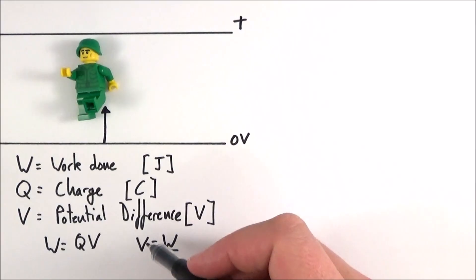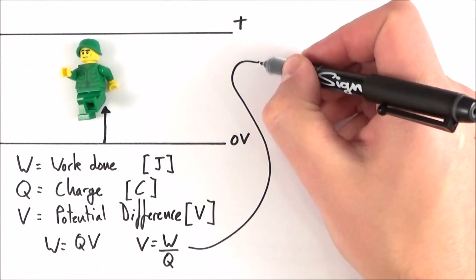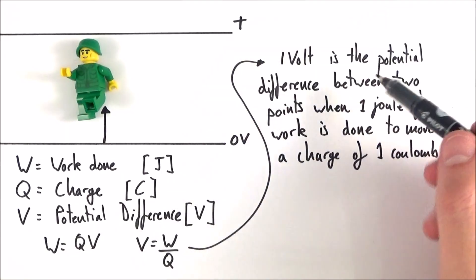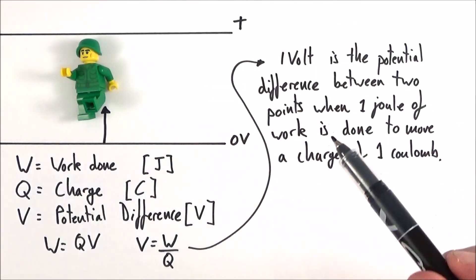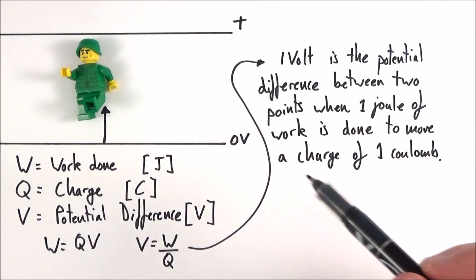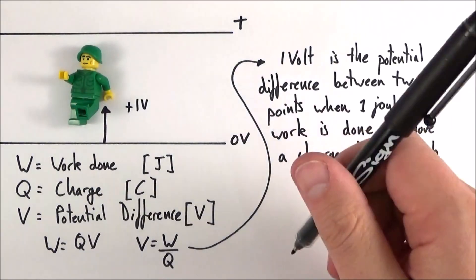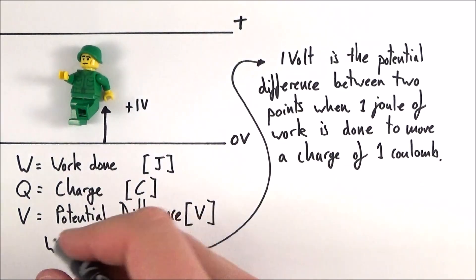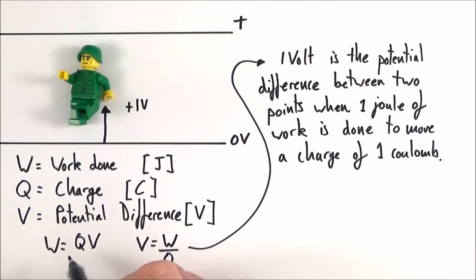And it's this equation here that really gives us the definition for the volt. Okay so one volt is the potential difference between two points when one joule of work is done to move a charge of one coulomb. The description down here I've just put a full definition of what one volt is and how this is related to potential difference and this equation here that W is equal to QV. The work done is equal to the charge multiplied by the potential difference.